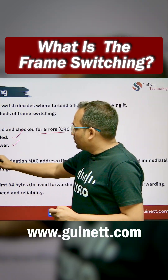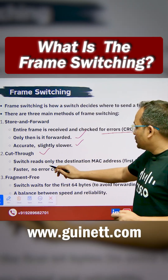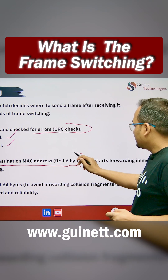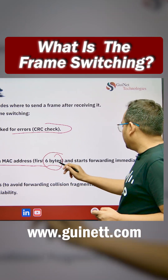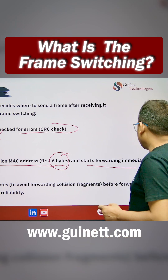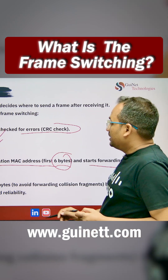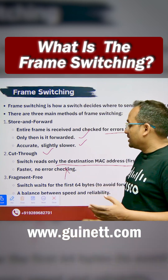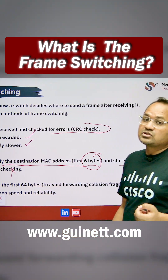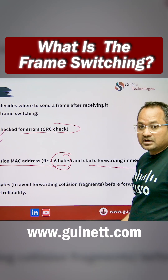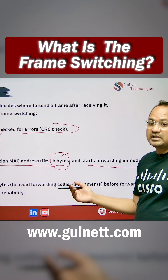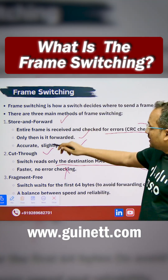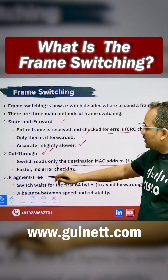Cut Through means the switch reads only the destination MAC address — the first six bytes — and then starts forwarding immediately. That makes it faster, but there is no CRC check happening. That is the Cut Through method.